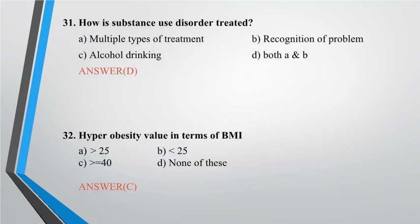Question 31: How is substance use disorder treated? A. Multiple types of treatment, B. Recognition of problem, C. Alcohol drinking, D. Both A and B. Answer: D.